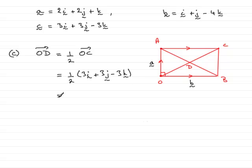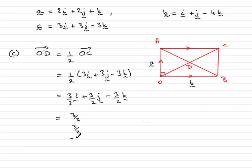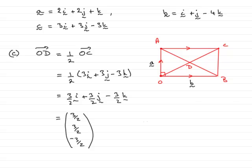And if we multiply this out, we just get (3/2)i plus (3/2)j minus (3/2)k. Or you might prefer to write it as a column vector, which will be 3/2, 3/2, and minus 3/2. I'm sure you could have done this question instantly just by looking at what the vector C was, but I just thought I'd show you the working anyway. So that brings us to the end of part C.